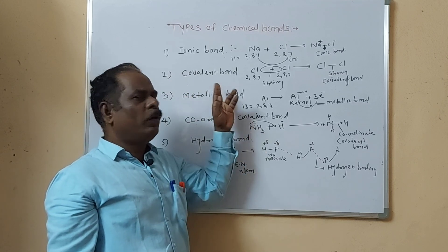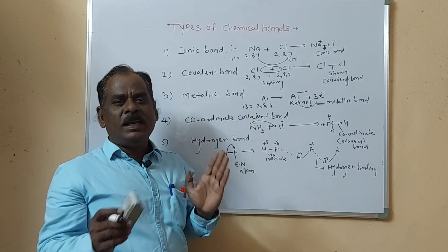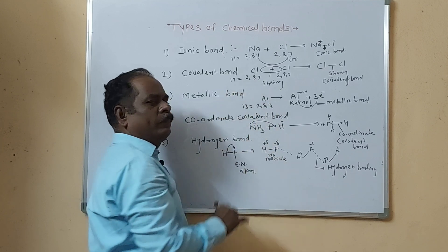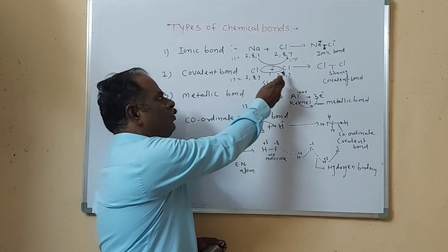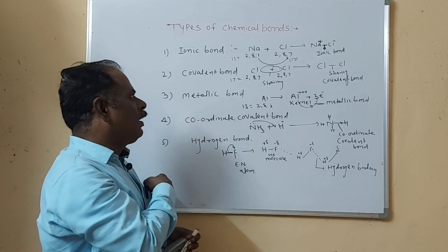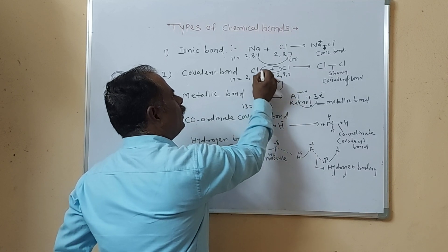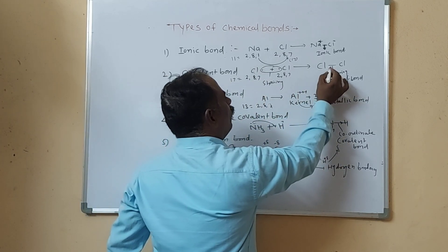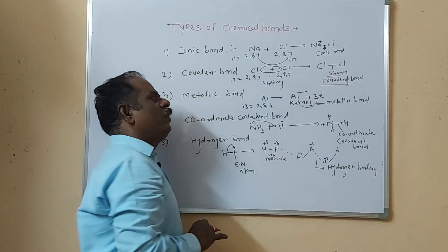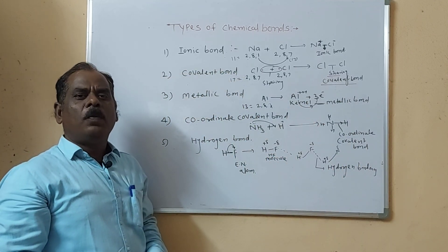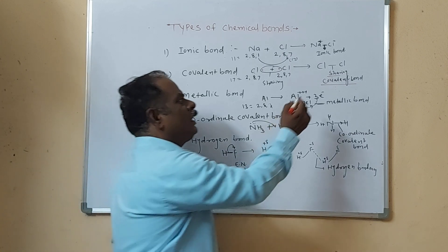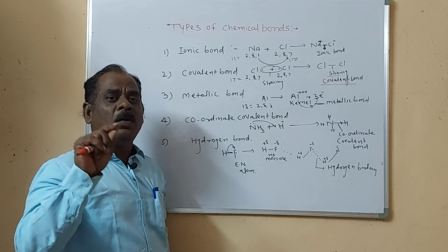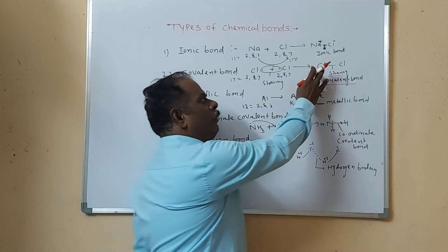Next, covalent bond. Covalent bond means when the bond is formed by sharing of electrons. For example, chlorine: atomic number of chlorine is 17, electron distribution 2,8,7. The last shell contains 7 electrons, so each chlorine atom requires 1 electron. This 1 electron of each chlorine atom is shared to complete the octet and form the bond. That bond is called the covalent bond. The chemical bond formed between two atoms by sharing of electrons is called covalent bond. This covalent bond is only observed in non-metallic atoms. Fluorine is non-metal; chlorine is non-metal.